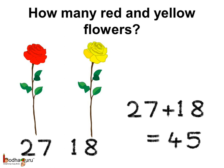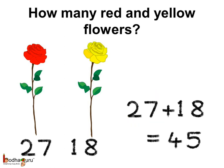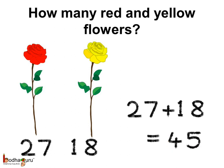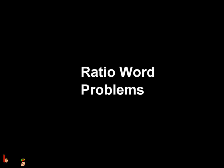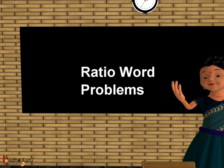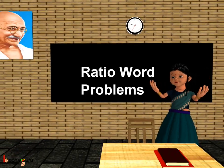Now if we add them, 27 plus 18 is equal to 45, which is the total number of flowers. So we got the correct number of red flowers and yellow flowers. That was all about ratios. Bye-bye children.